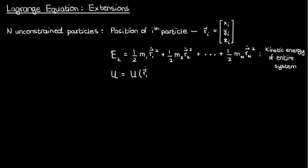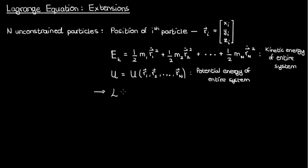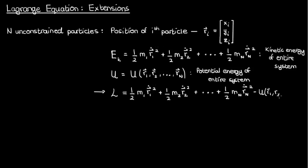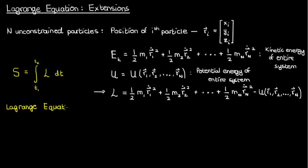The potential energy of the entire system would now depend on the positions of all the n particles. This means that the Lagrangian of this entire system would be given by this total kinetic energy minus this potential energy. As with one-particle systems, the action integral is once again the integral of this Lagrangian over time, and the Lagrange equations that make this action integral stationary are similar to before, but now there are separate Lagrange equations for every particle.